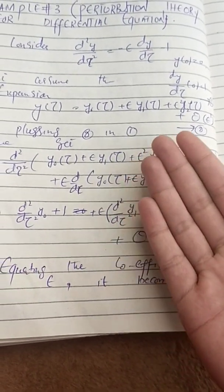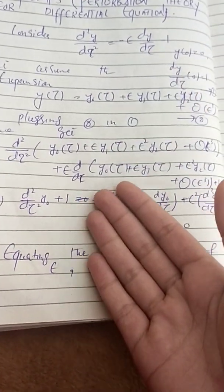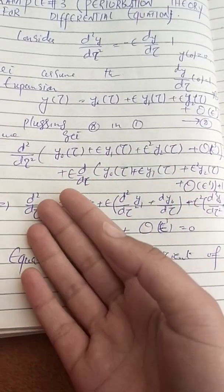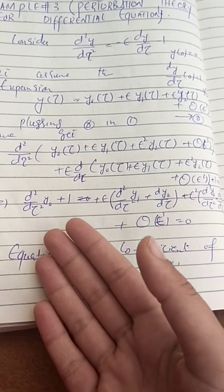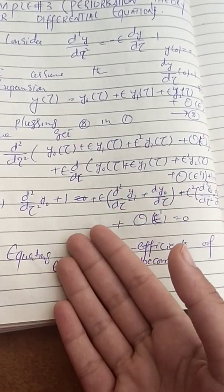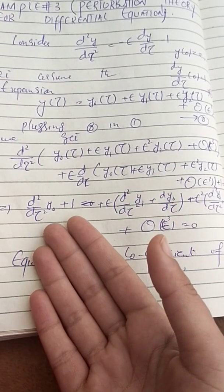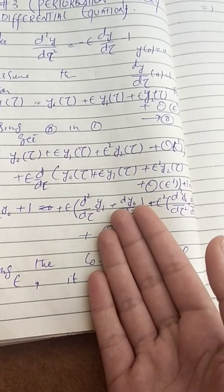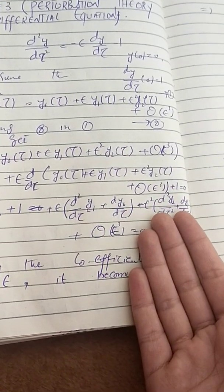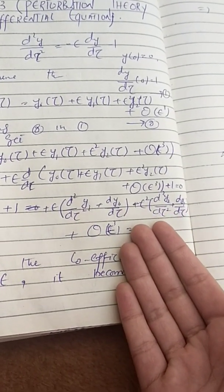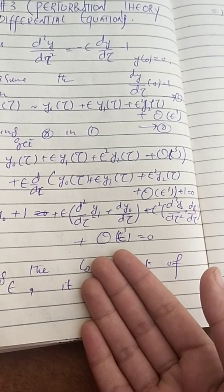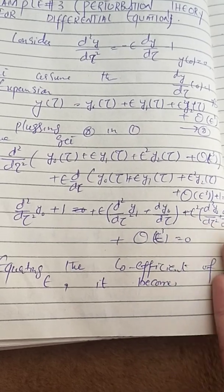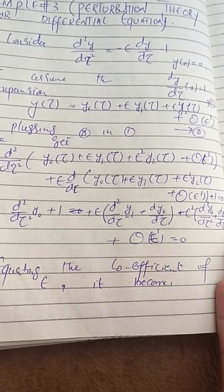We substitute equation 2 into equation 1. After simplification we get: d²/dτ²(y₀ + 1) plus the epsilon term plus the epsilon² term plus O(epsilon³) equals 0.